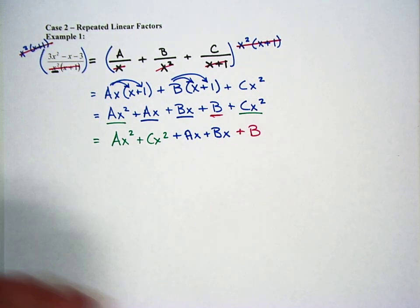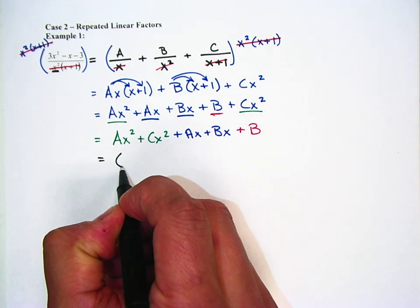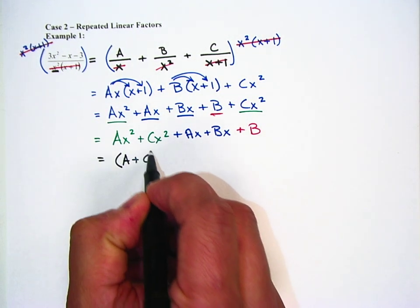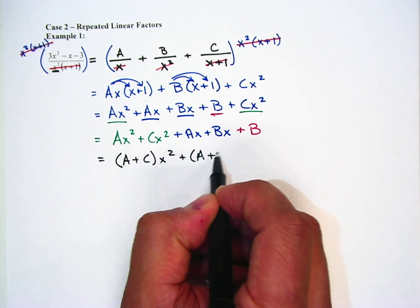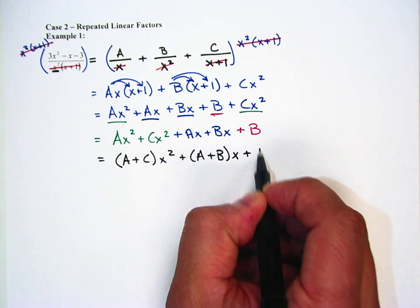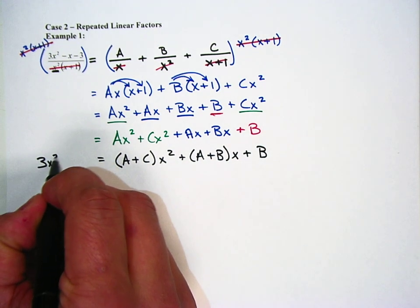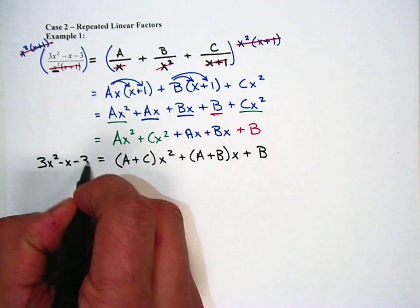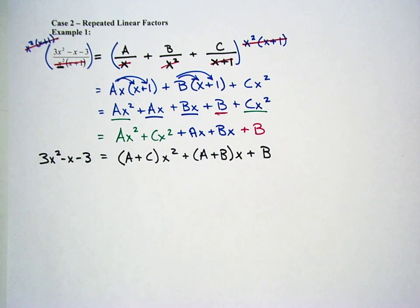Next step is to get the coefficients out. So I'm going to say A plus C, x squared, plus A plus B, x plus B. Over here on the right, I'm going to write out the 3x squared minus x minus 3, which was from the beginning. And here's the cool thing.